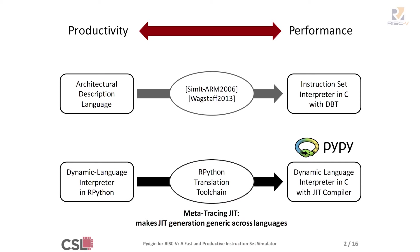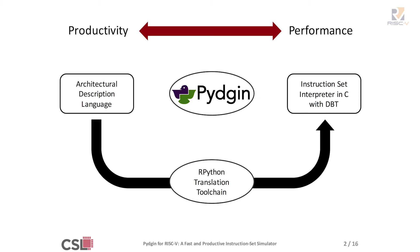Our observation is that we could use the same framework — the RPython Translation Toolchain — to write our interpreter Pigeon in RPython, translate this automatically, and get the benefits of JIT compilation as well. For the purpose of this talk, DBT and JIT will be used interchangeably; they mean roughly the same end result in this context.